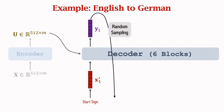We do random sampling according to Yt to generate a German word. After T repeats, the decoder generates the T-th German word. Taking X'1 to X't as inputs, the decoder outputs Y1 to Yt, where Yt depends on all the vectors X'1 to X't and matrix U. We do random sampling according to Yt. If the sampled word is a stop sign, we stop running the decoder and return the generated German sentence.